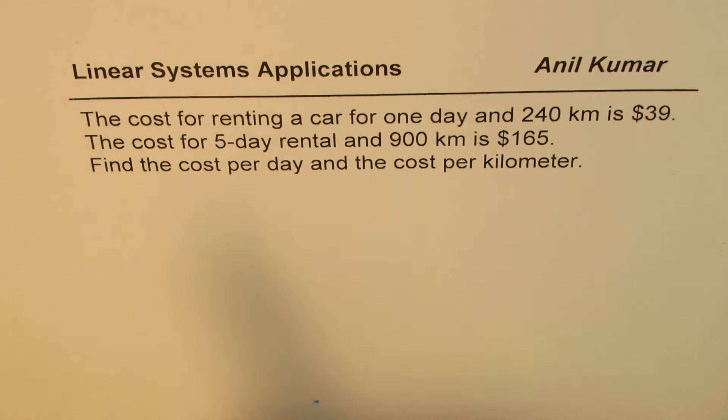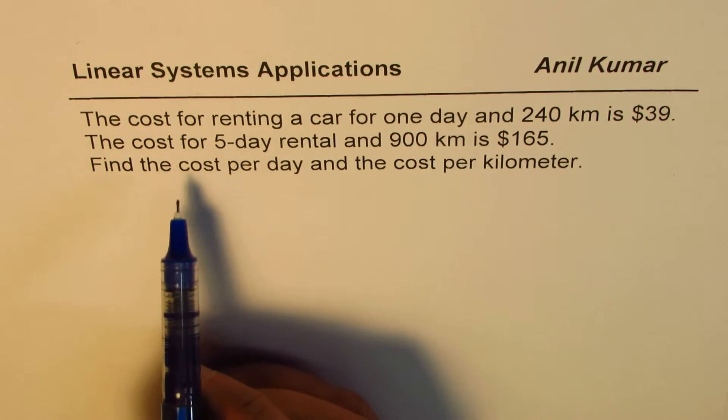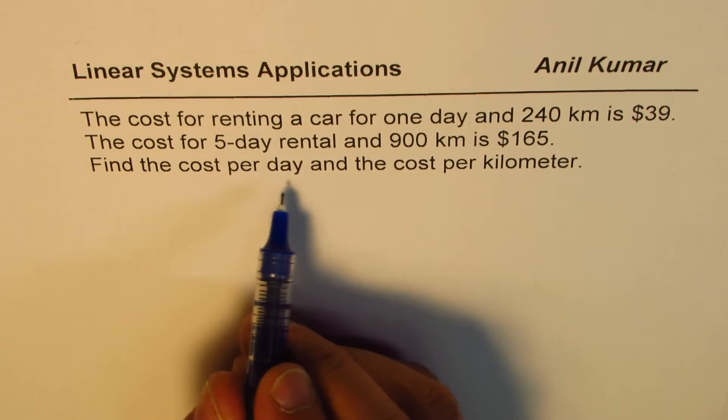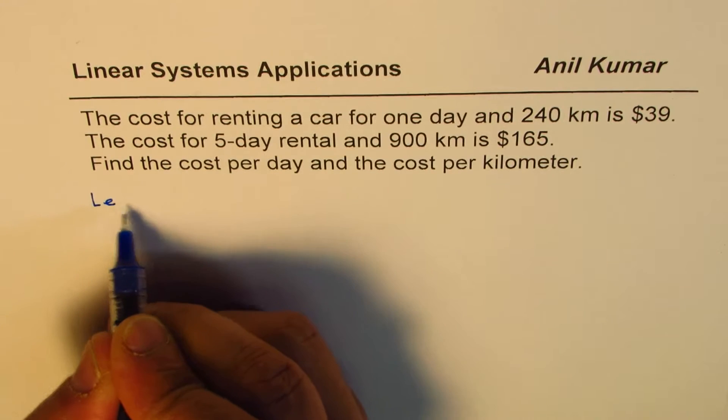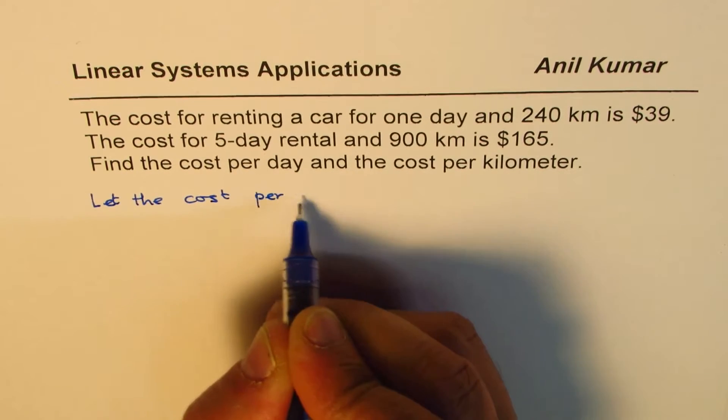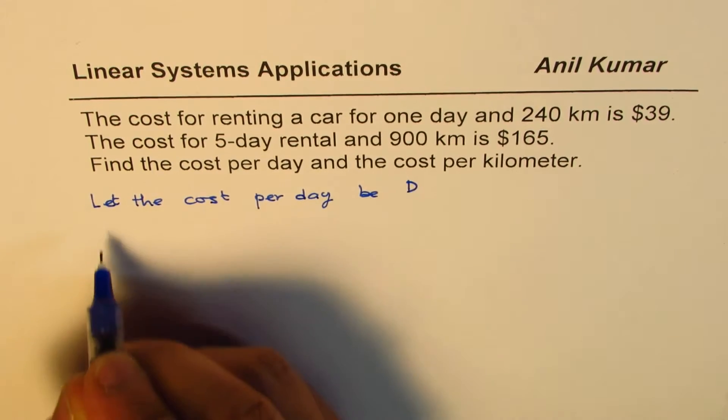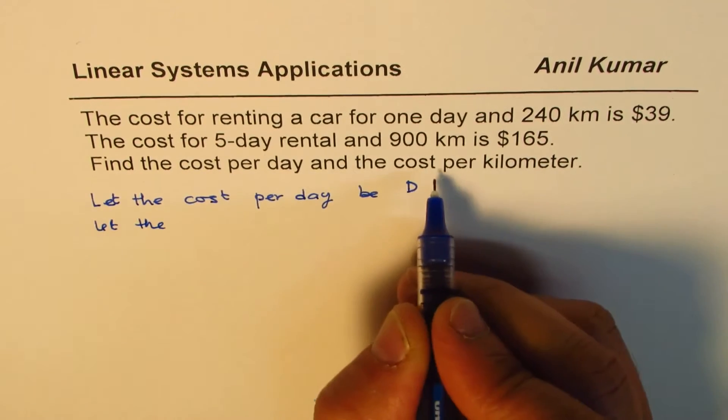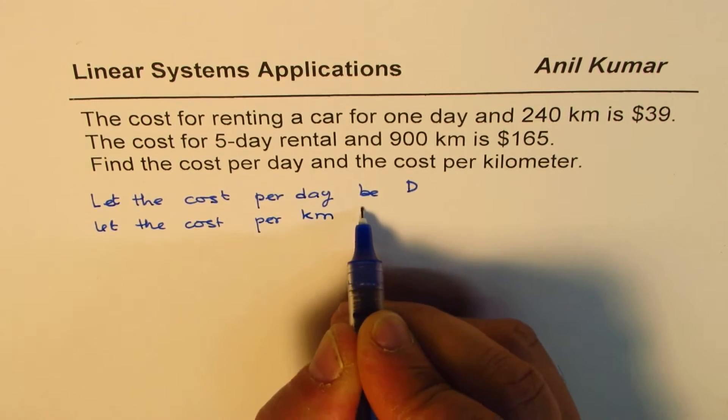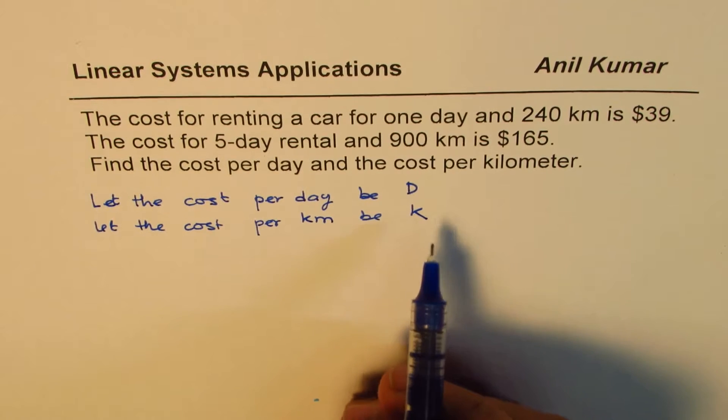Now, to answer such questions, you should begin by understanding what to find. In this particular case, it says find the cost per day and cost per kilometer. So what we will do here is we will define our variables with let statements. Let the cost per day be D and let the cost per kilometer be K.